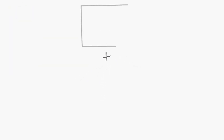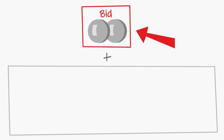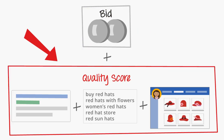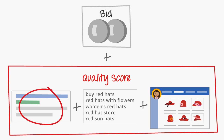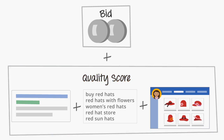Think of AdRank as a formula with two variables: the maximum amount you'd be willing to pay every time someone clicks on your ad — in shorthand, your bid — and your quality score. Quality score is an estimate of the relevance and usefulness of your ad, keywords, and your website's landing page, as well as the likelihood that users will actually click on your ad.